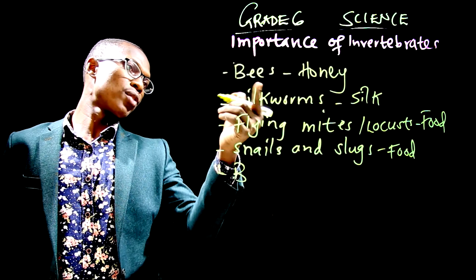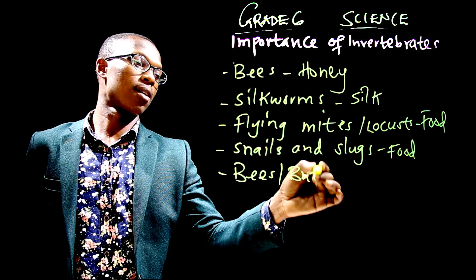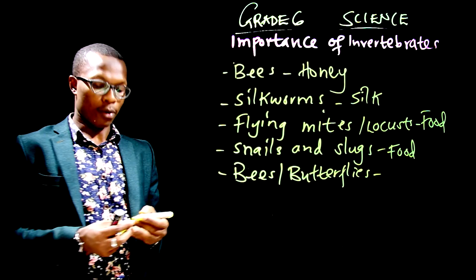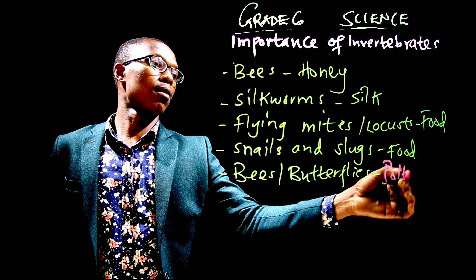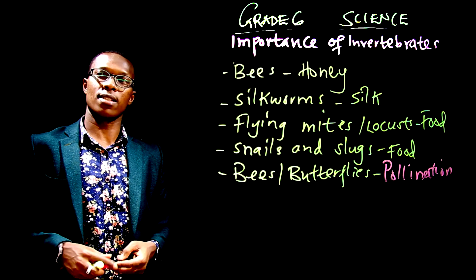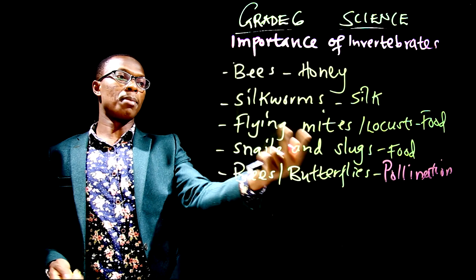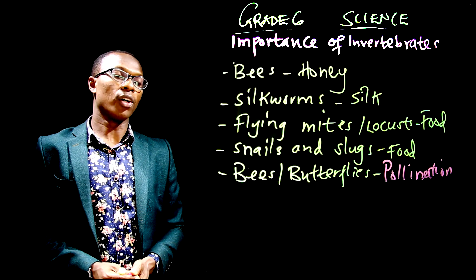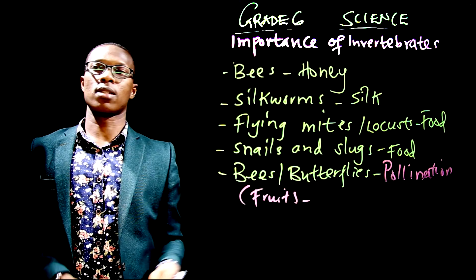We've talked about bees, and we also have butterflies. All these are insects. Now, these ones normally help during pollination. I'm sure you can recall in our first lessons, we were discussing about plants and we discussed about how pollination takes place. So, bees and butterflies are examples of pollinators. In order for us to get food or fruits that we eat, there must be pollination.